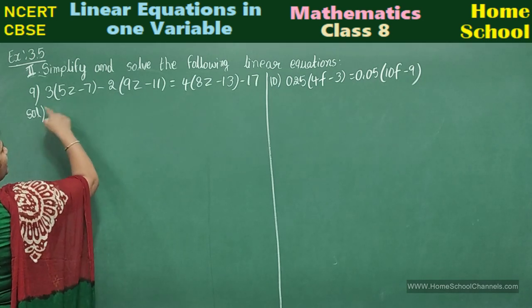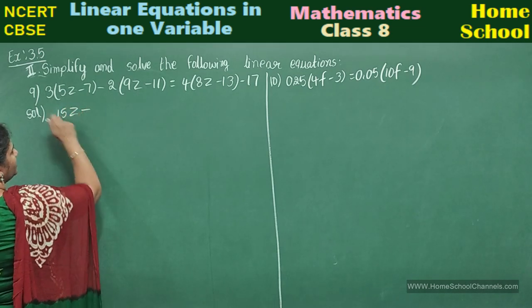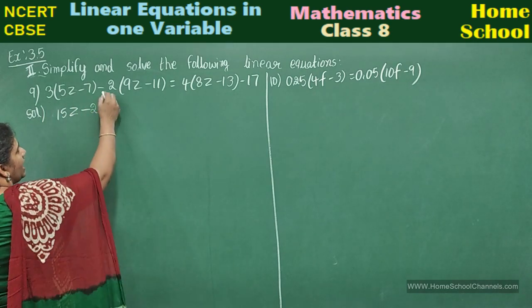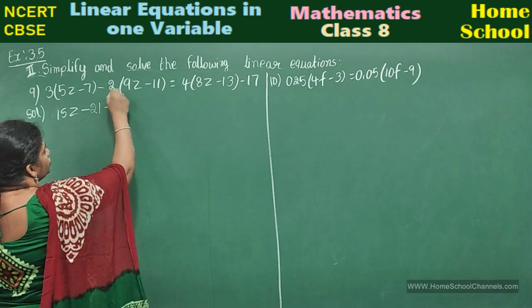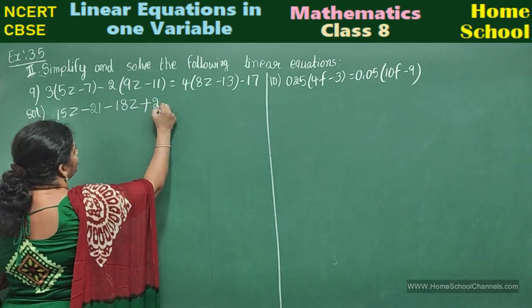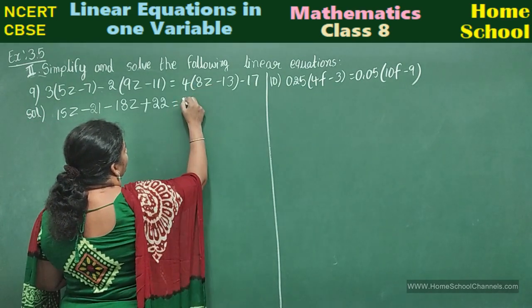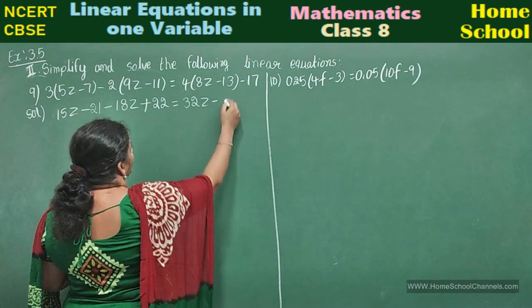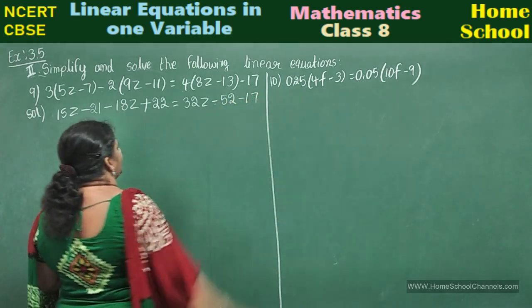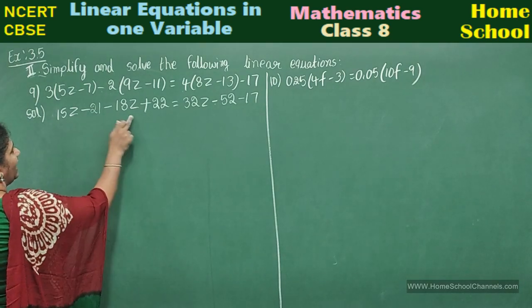Multiply the brackets: 3 into 5 is 15z minus 3 times 7 is 21. And now minus 2 times 9z is 18z, and minus into minus is plus 2 times 11 is 22. This equals 4 into 8z is 32z minus 4 times 13 is 52 minus 17.